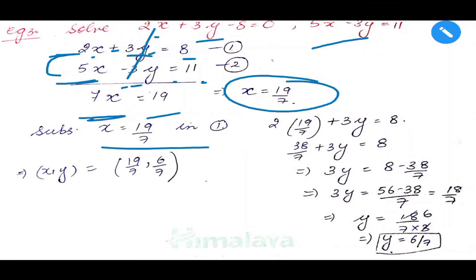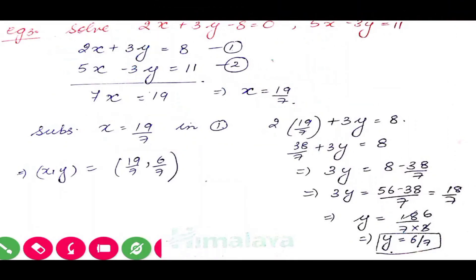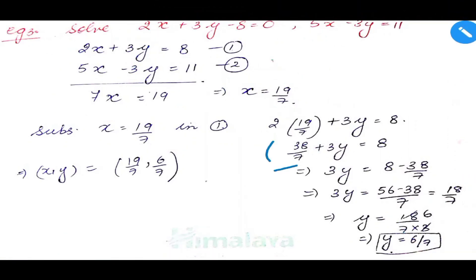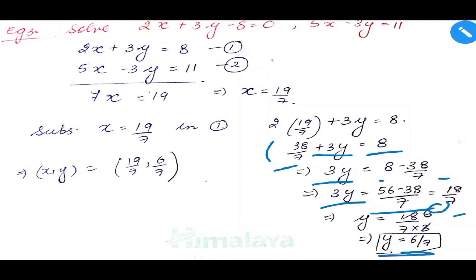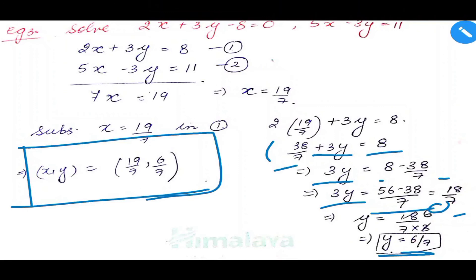Substituting x equals 19 by 7 into equation 1: 2 times (19 by 7) plus 3y equals 8, giving 38 by 7 plus 3y equals 8. So 3y equals 8 minus 38 by 7. Taking the LCM as 7: 3y equals 18 by 7. Therefore y equals 6 by 7 (dividing numerator and denominator: 18 and 3 cancel to give 6). The final answer is x equals 19 by 7 and y equals 6 by 7.